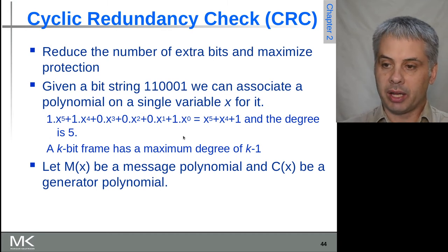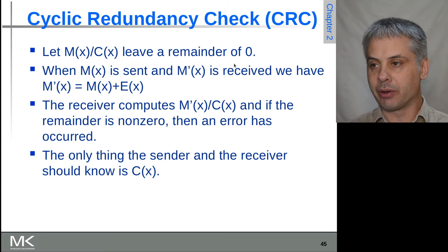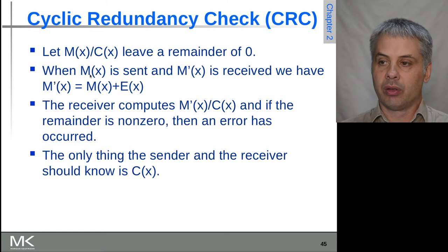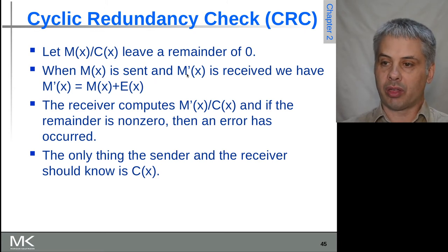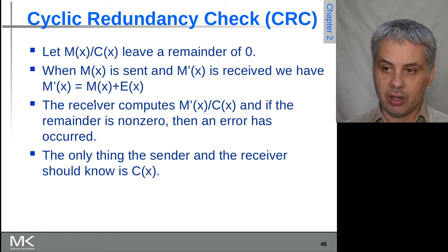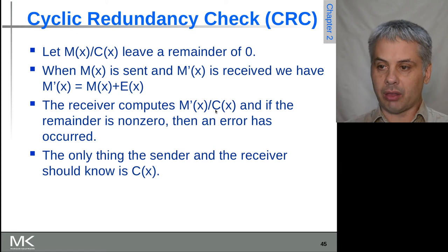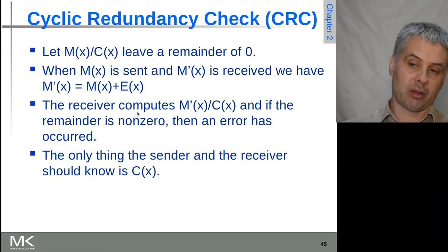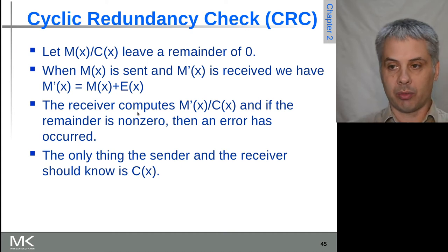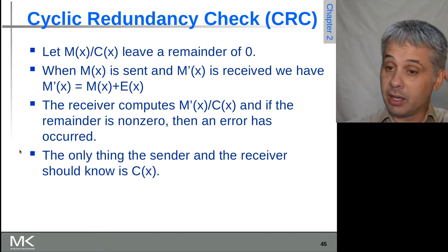Let's think about having a message polynomial m(x) and a generator polynomial c(x). We want the message polynomial divided by the generator polynomial to leave a remainder of 0 — this is the test that must be satisfied. So the sender transmits m(x) and the receiver receives m'(x), which is the original message plus some error e(x). The receiver computes m'(x) divided by c(x), and if the remainder is non-zero then an error has occurred. If an error has occurred it will perturb the calculation at the receive end, so m'(x) won't equal m(x), and we can detect that in quite an efficient manner.